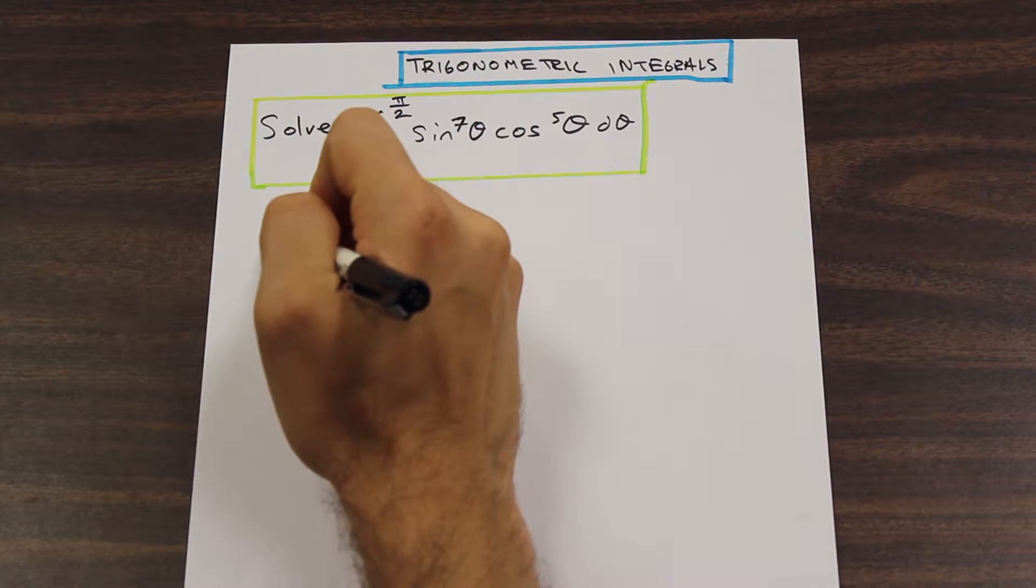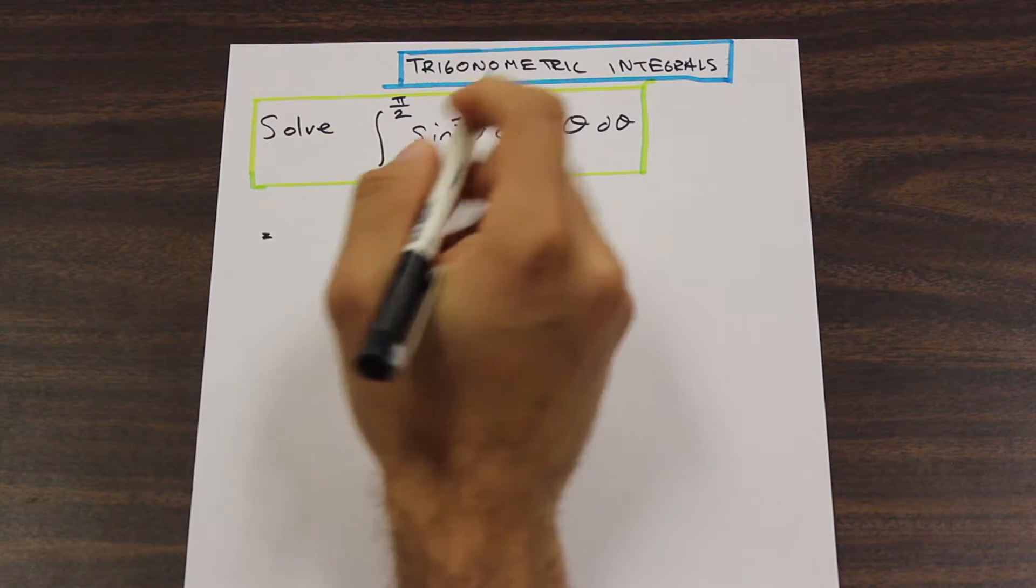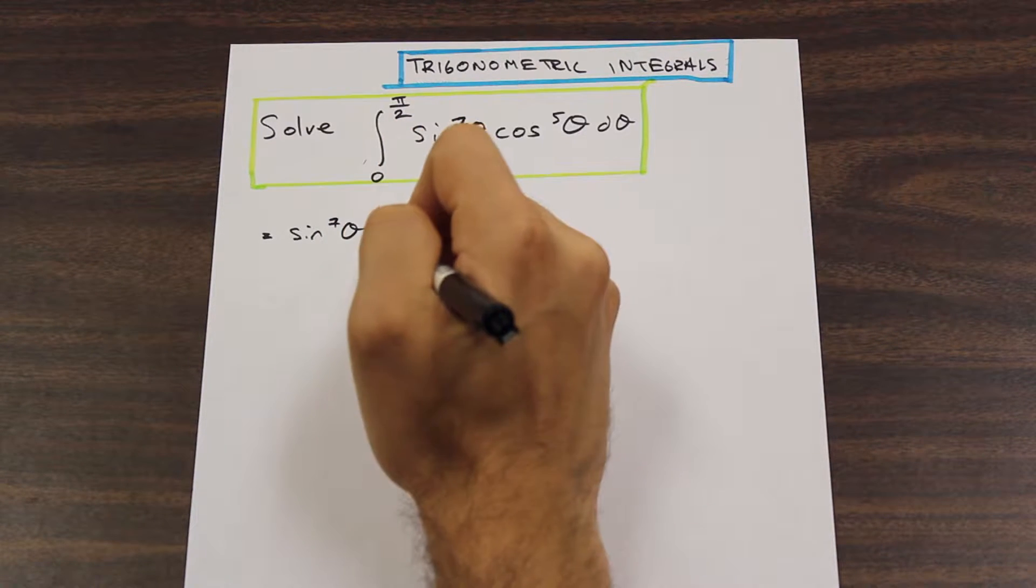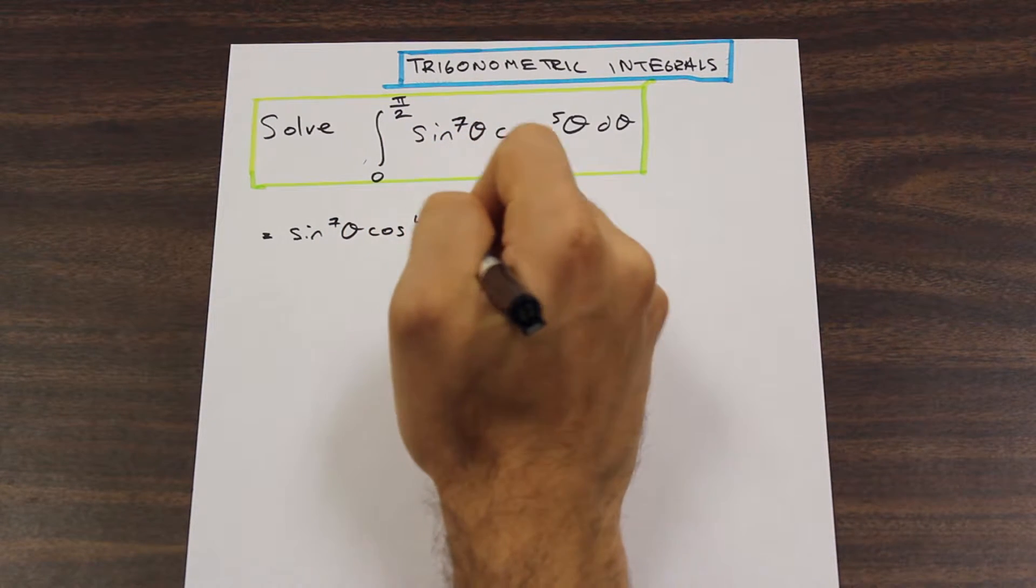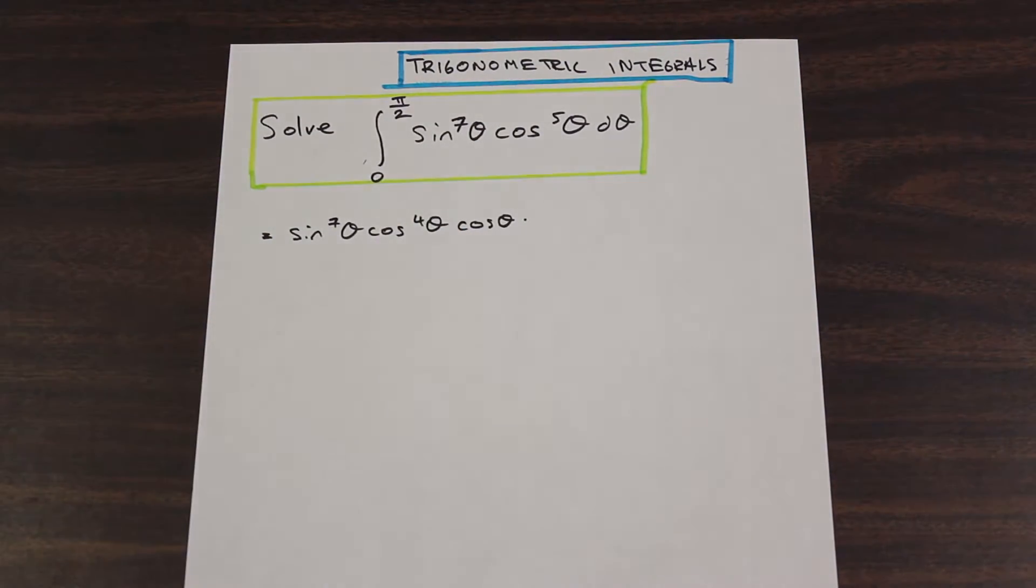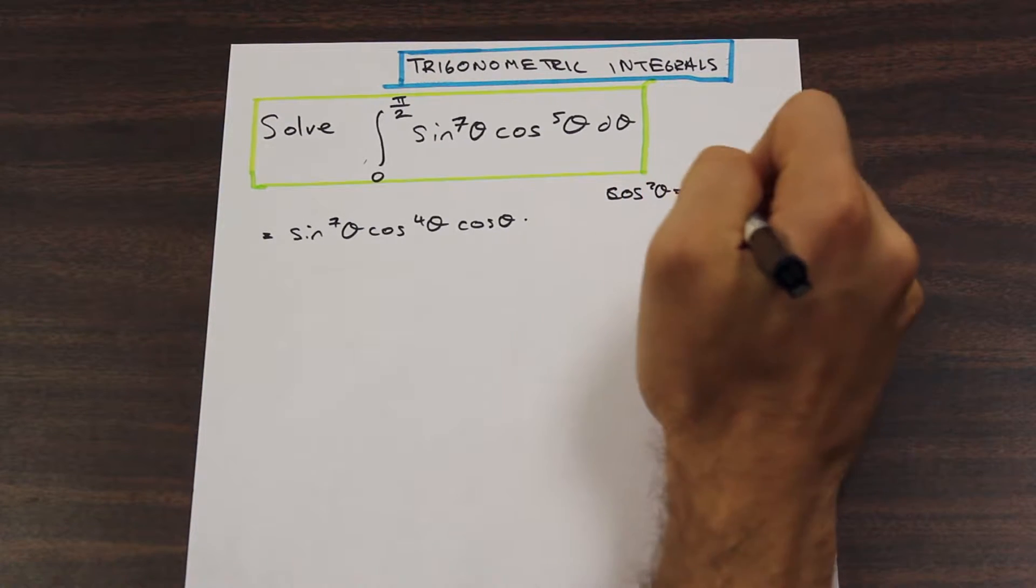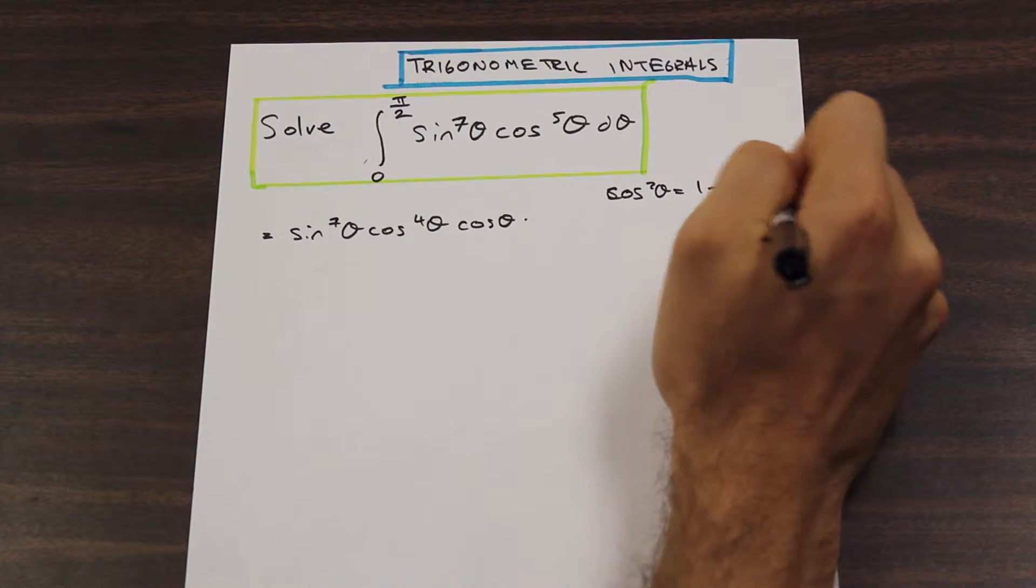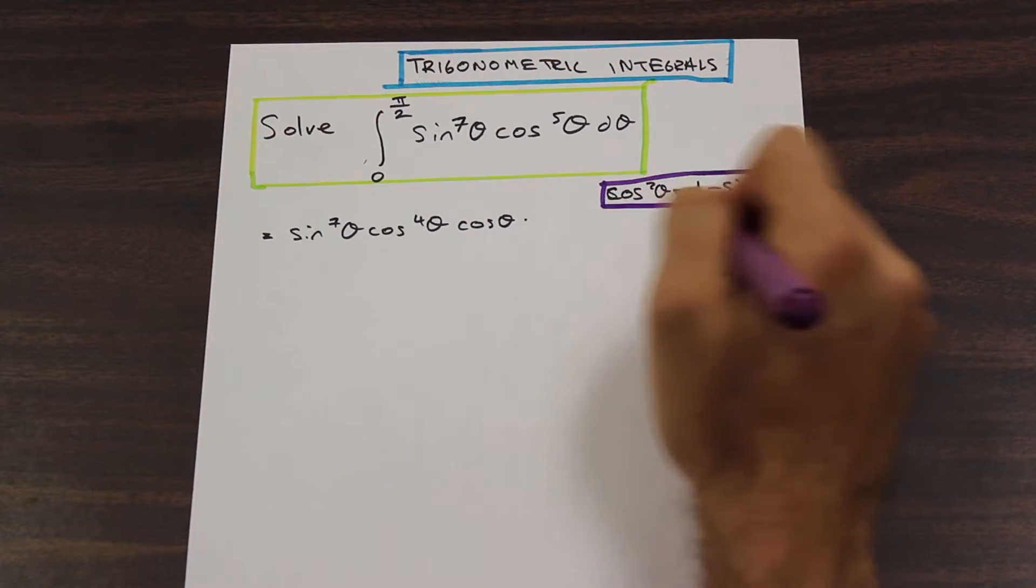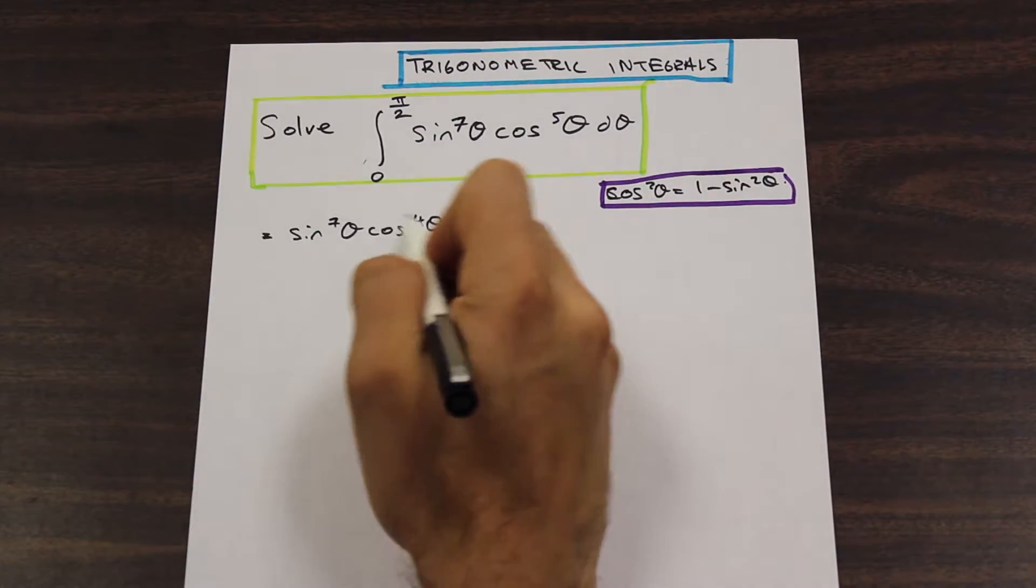Let's start with that. I'm not going to write this all out every time. We have sine to the 7th theta cosine 4th theta cosine theta. So we've taken that cosine, we've taken it outside. And now we're going to use cosine squared theta equals 1 minus sine squared theta. That's an identity that we should all know by this point.